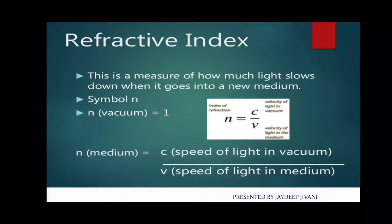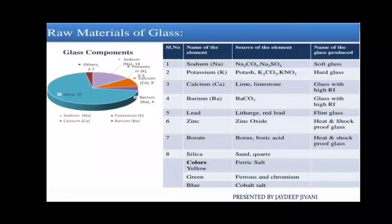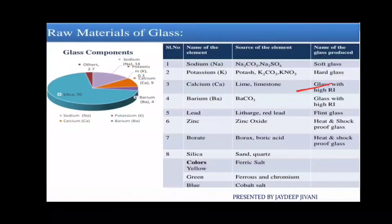This is all about the refractive index. I hope you easily understood that. So now you know what the refractive index is. Calcium is used to increase the refractive index — it is used for glass with a high refractive index.